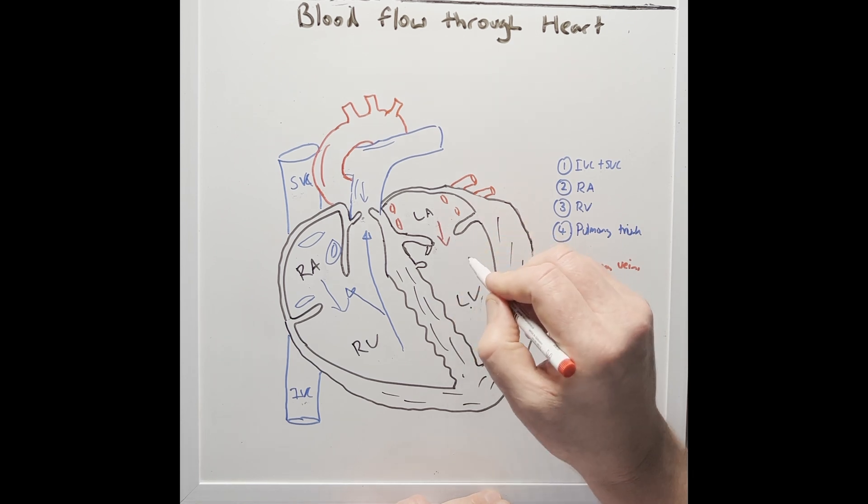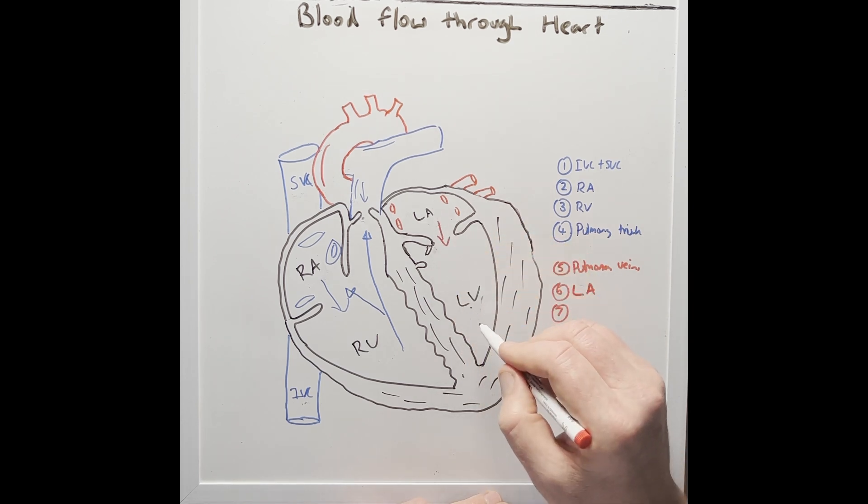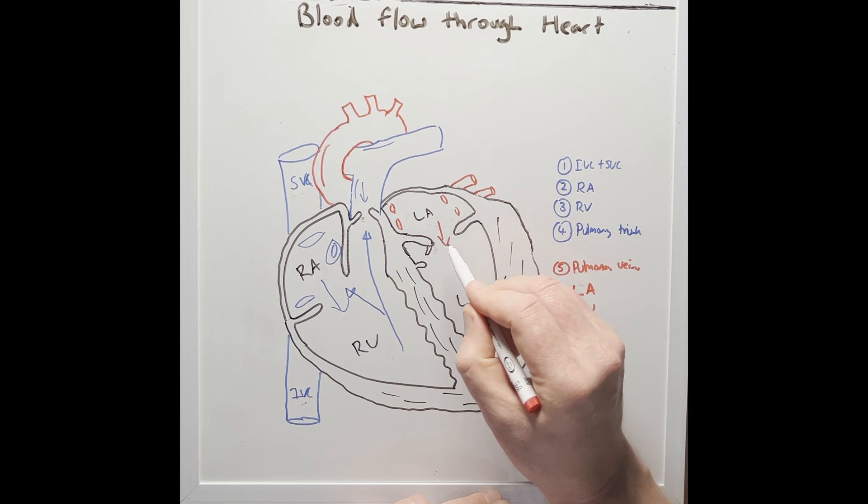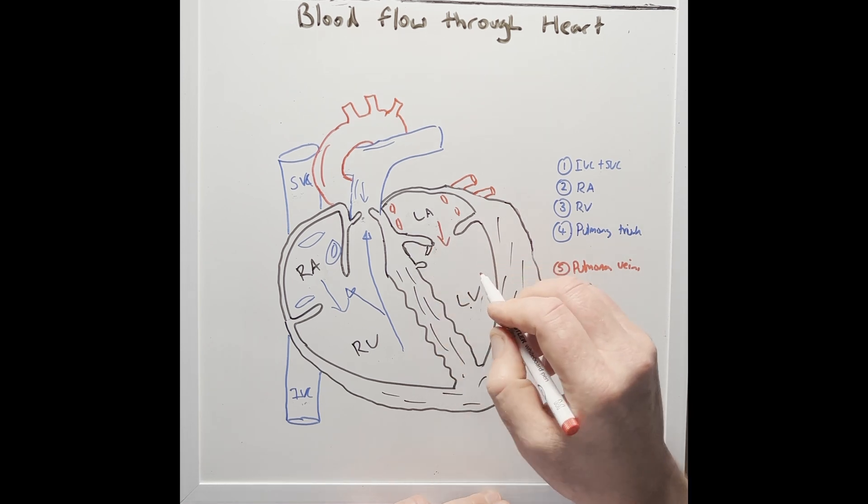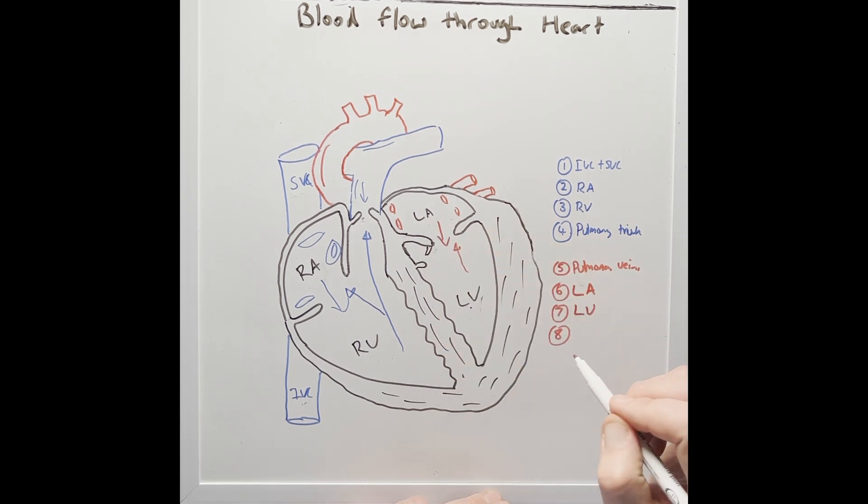And then the blood enters the left ventricle on diastole, moving through the bicuspid valve, which prevents blood going backwards up into the left atrium.